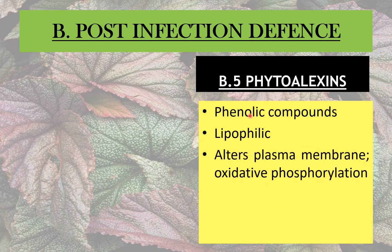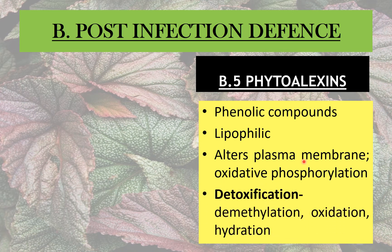Phytoalexins have different modes of action. Usually they alter the plasma membrane of the pathogen and have the ability to inhibit oxidative phosphorylation or the electron transport chain. When they inhibit oxidative phosphorylation, there is obstruction in the energy transfer of the organism, leading to reduced growth or inhibition of growth of the pathogen. Some organisms do have a method of detoxifying phytoalexins — by chemical modification such as demethylation, oxidation, or hydration — allowing certain pathogens to resist or tolerate the phytoalexins produced by the host plant.